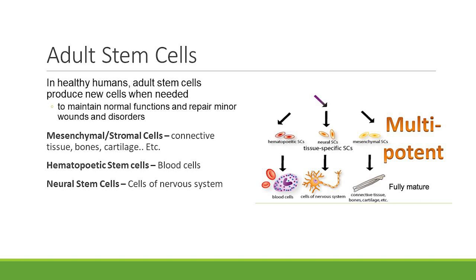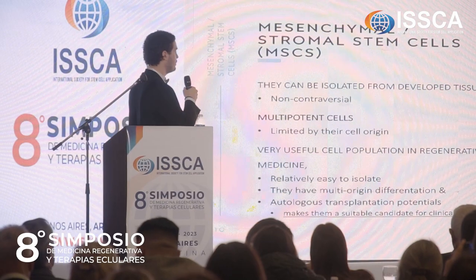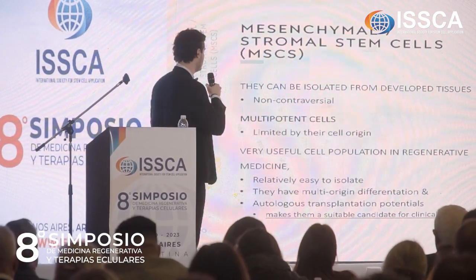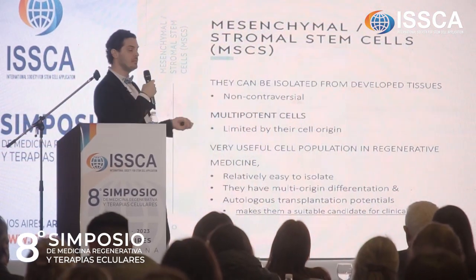We have many types of adult stem cells. Mesenchymal stromal cells create connective tissue — they can transform into connective tissue, bones, and cartilage. We have hematopoietic stem cells that transform into blood cells, and neural stem cells that transform into cells of the central nervous system. Mesenchymal stem cells can be isolated from developed tissues; they are multipotent, very useful in regenerative medicine, relatively easy to isolate, and have multi-origin differentiation capacity.